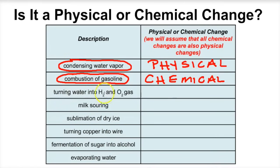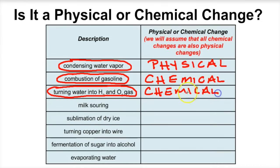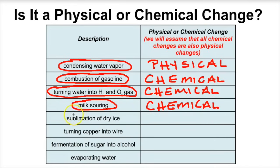Turning water into hydrogen and oxygen gas — that's electrolysis — anytime you're turning one substance into two different substances, that's a chemical change. Milk souring: milk breaks down and is converted into different substances, so that's a chemical change. The sublimation of dry ice — going from a solid directly to a gas — is a change in state of matter, so that's a physical change. Turning copper into wire: it's still copper in a different physical form — physical change.